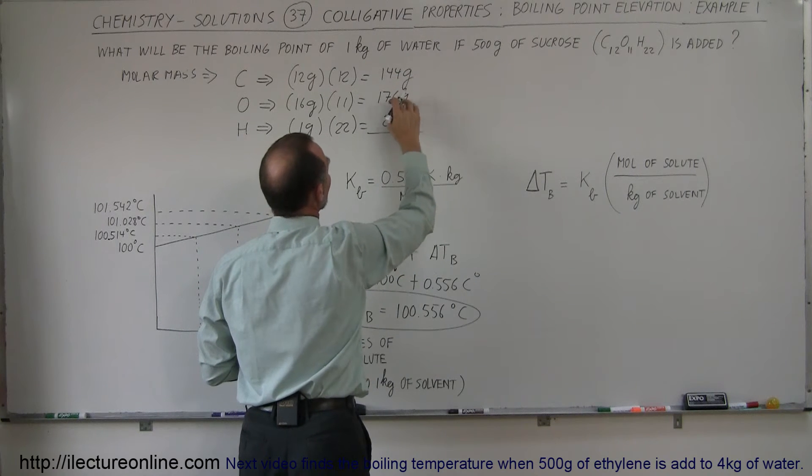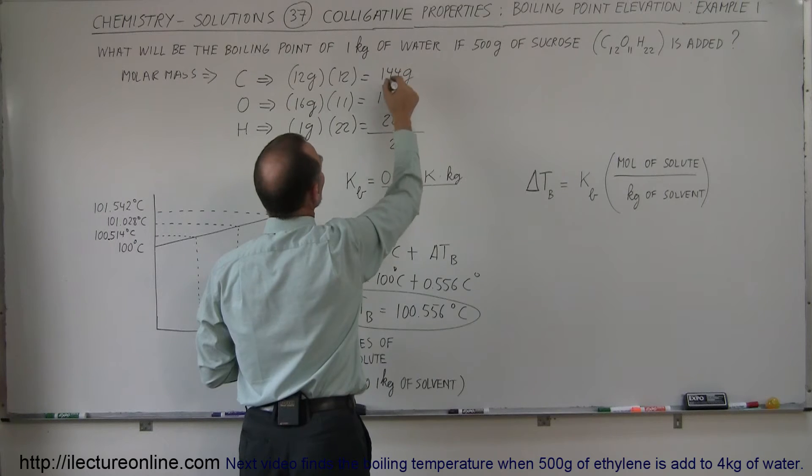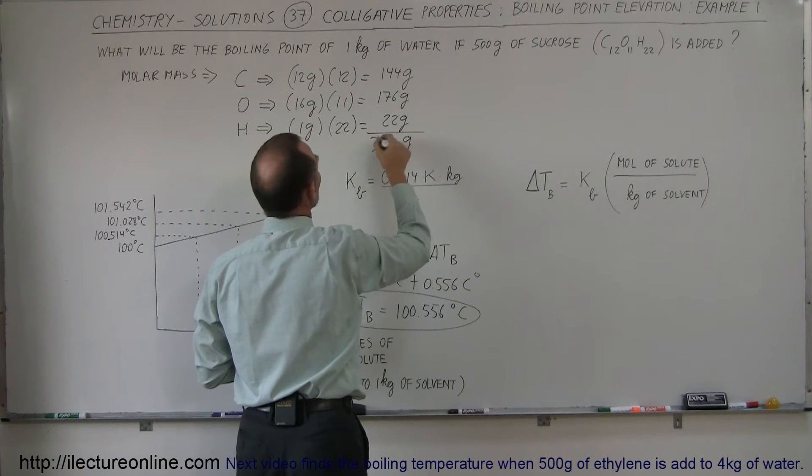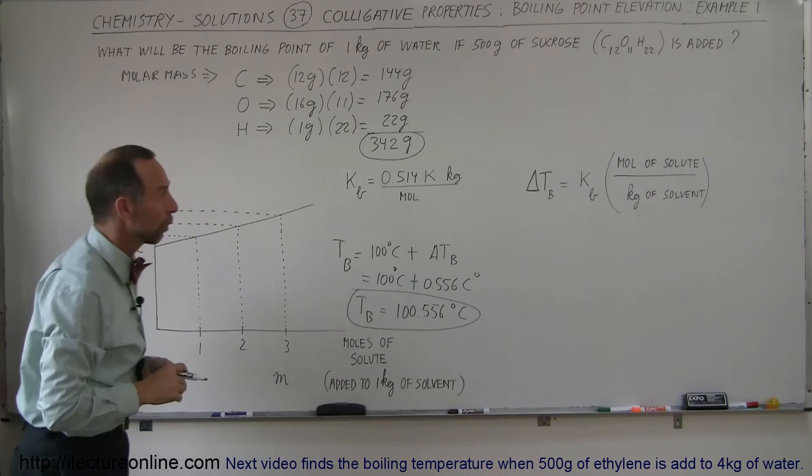So that's 4 plus 6, that's 10, that's 2, 1, that's 5, 12, 4, 1. That's 342 grams for one mole of sucrose.